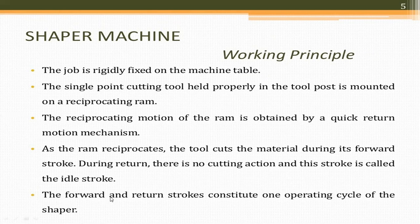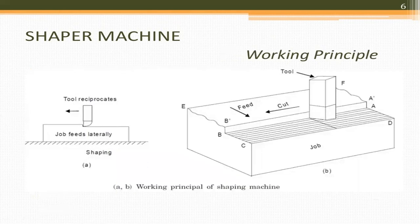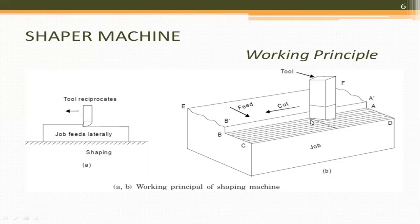The forward and return stroke together constitute one operating cycle of the Shaper. During the forward stroke the tool takes a cut on the workpiece, and during the return stroke it simply moves back without cutting. This is the working principle of the Shaper machine.